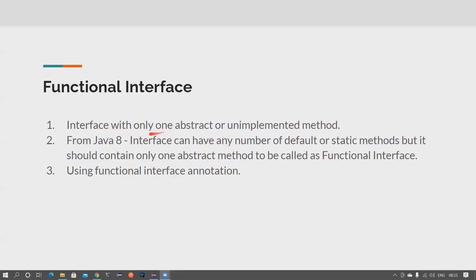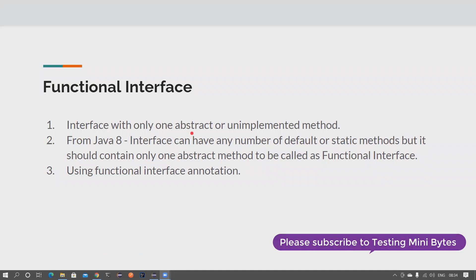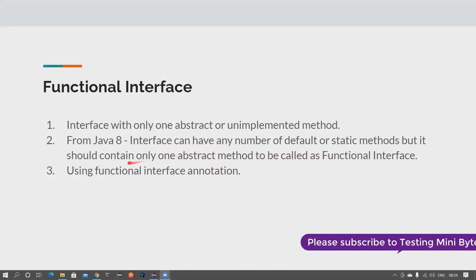If there is an interface with just only one abstract or unimplemented method, then we call it a functional interface. This statement holds true before Java 1.7, because before 1.7 we could only have abstract methods in an interface. But from Java 8, we can also have default and static methods in a functional interface. So from Java 8, if you have an interface with any number of default or static methods, but there should be only one abstract method, then it can also be called a functional interface.